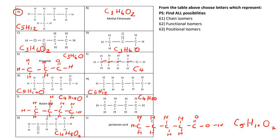Now this is going to make our life easier to figure out chain isomers, because isomers have to be the same. So I can see C5H12 here and another one. Then C3H6O2 — is there another? Yes, there. And then C3H6O — those ones over there.